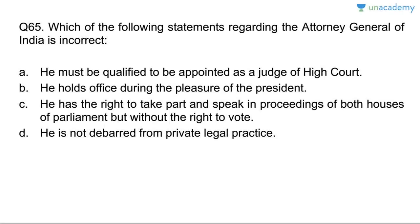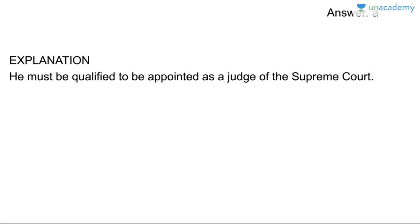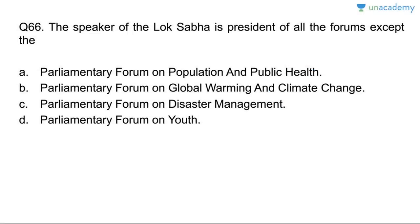Question sixty-five: which statement about the Attorney General of India is incorrect? He holds office during the pleasure of the President — correct. He must be qualified to be appointed as a judge of the High Court — wrong; it is the Supreme Court. He is not debarred from private legal practice — correct. He has the right to take part but cannot vote — correct. Answer: the incorrect statement is that he must be qualified as a High Court judge.